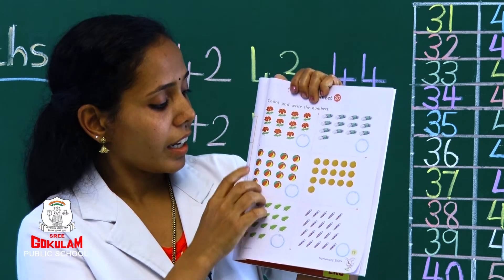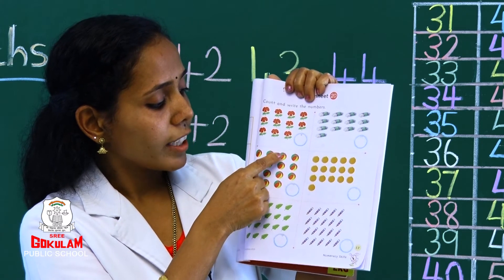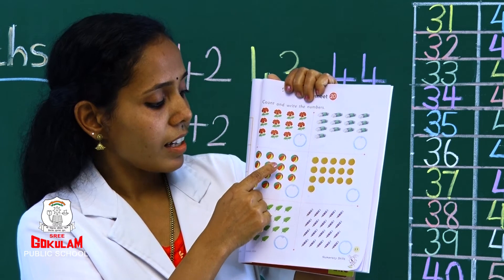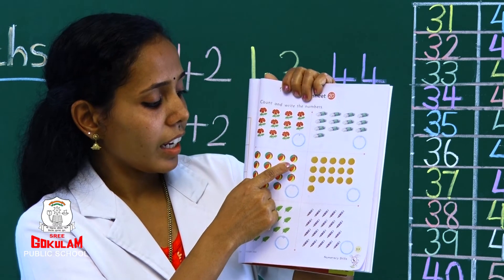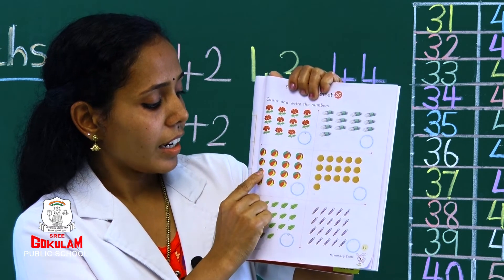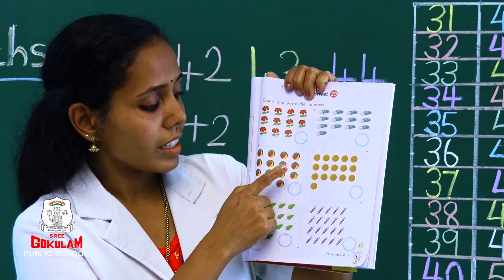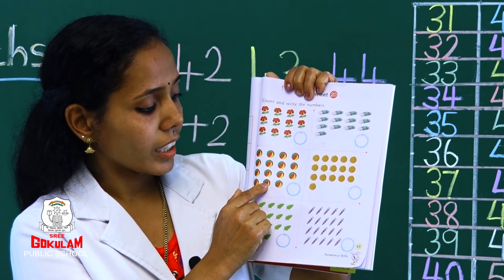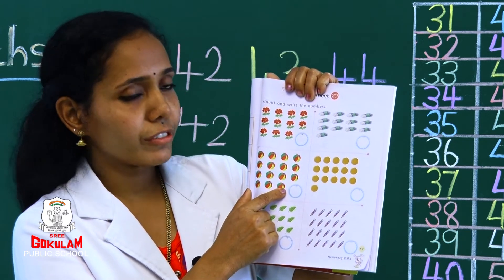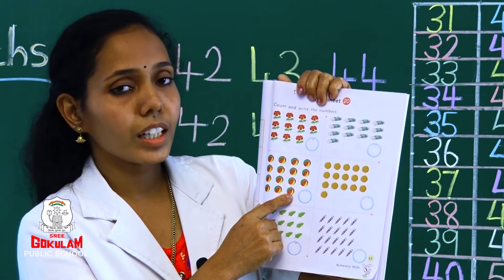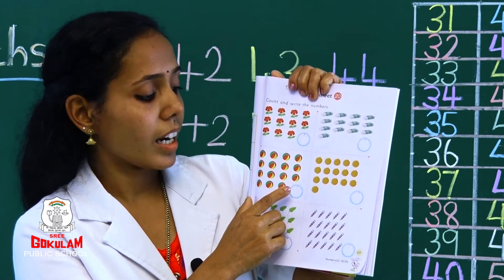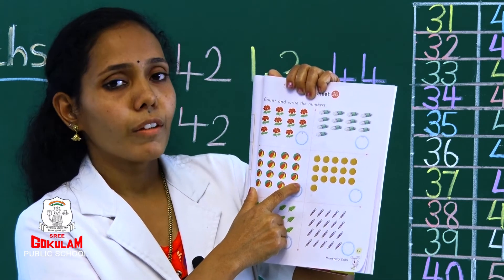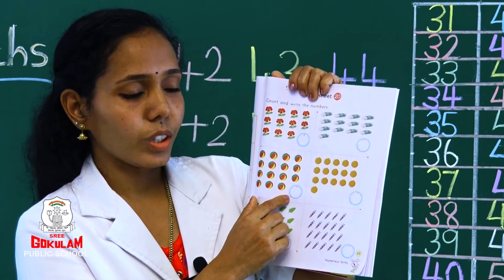Balls are 1, 2, 3, 4, 5, 6, 7, 8, 9, 10, 11, 12, 13, 14, 15 — 15 balls. Write number 15: 1, 5, 15. Okay.